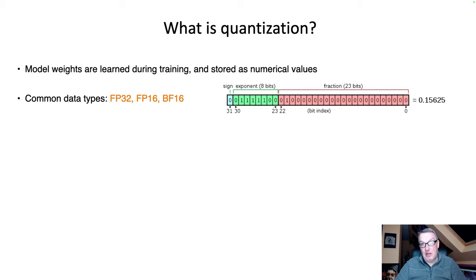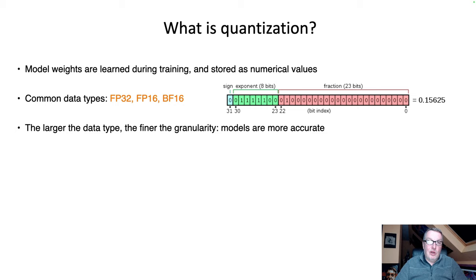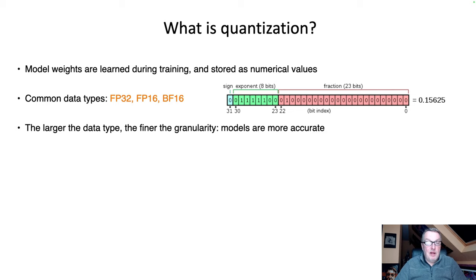Some bits are used for the exponent and there's a sign bit as well. The formats have different lengths and use a different number of bits for different things. Obviously, the larger the data type we use to store model parameters, the finer the granularity — the more precisely we can represent two values that are just a little bit different. If we have more bits, we can be more precise, and that helps the models be more accurate.